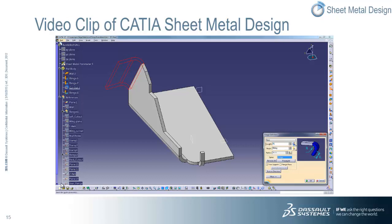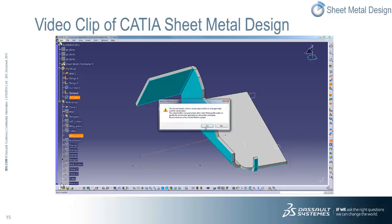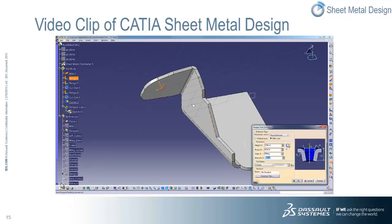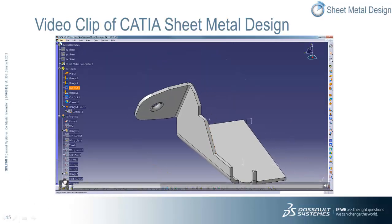Then we create another flange. We then do another cutout based upon a specified profile and apply some rounded corners on the new flange. Then we create a flanged hole on the new flange by specifying the appropriate parameters within the pop-up window. This is a predefined feature containing the specific parameters needed to define a flanged hole. To create the same flanged hole using CATIA part design would require several features, where a CATIA sheet metal flanged hole is simply one intelligent feature.